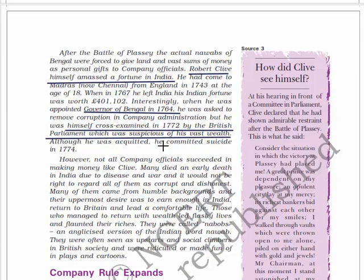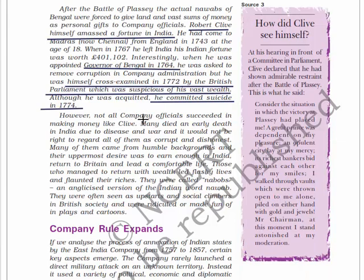Although acquitted, Clive committed suicide in 1774. However, not all company officials succeeded in making money like Clive - many died early deaths in India due to disease and war, and it would not be right to regard all of them as corrupt and dishonest. Many came from humble backgrounds with an uppermost desire to earn enough in India to return and lead a comfortable life. Those who managed to return with wealth led flashy lives and flaunted their riches.